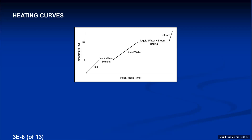The five regions of a heating curve are: (1) solid is warmed, (2) constant temperature as it melts, (3) liquid is warmed, (4) constant temperature as it boils, and (5) vapor is warmed. Every material has this same shape, with its own unique melting and boiling points determining where the flat regions occur.